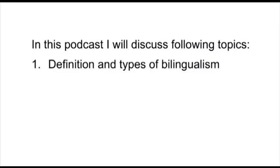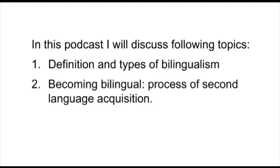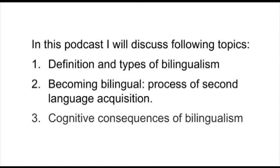This podcast will have three parts in which I'm going to discuss the following topics. The first topic will be the definition of bilingualism and description of different types of bilingualism. The second topic will deal with the process of becoming bilingual, also known as the process of second language learning. And finally, I'm going to consider some of the cognitive consequences of bilingualism on the language system and on the cognitive system in general.